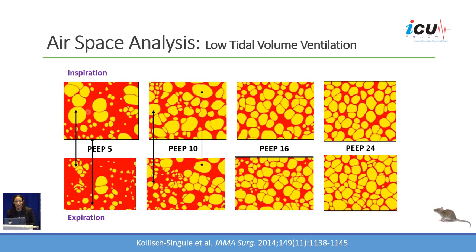The alveoli that were collapsed in expiration almost did not open at all during inspiration. When you increase the PEEP, you open some of those collapsed alveoli in expiration, and the airspace difference between inspiration and expiration becomes much lower. At PEEP of 16 and PEEP of 24, you can barely see any difference between expiration and inspiration. At PEEP of 24, the strain at the alveolar level is at its lowest compared to PEEP of 10 or PEEP of 5.